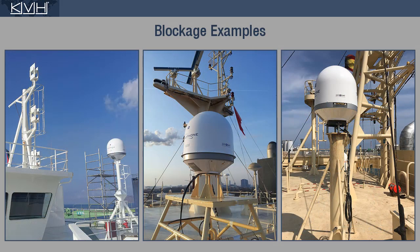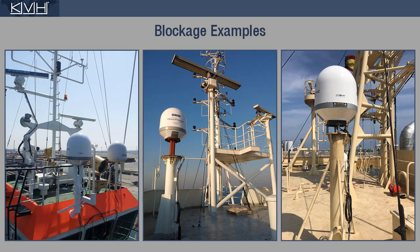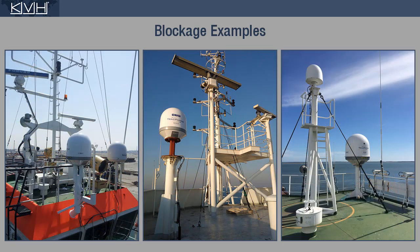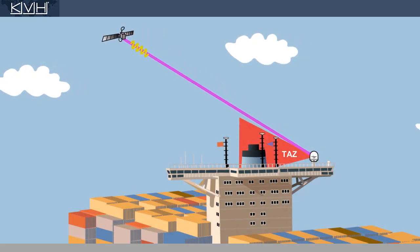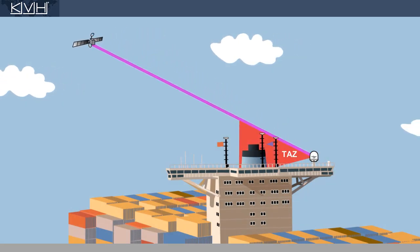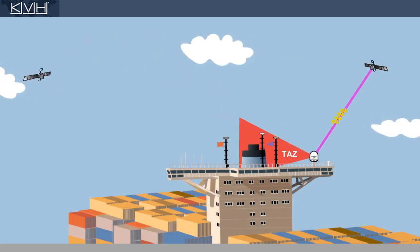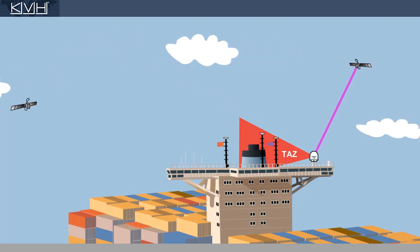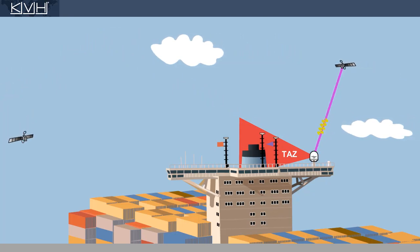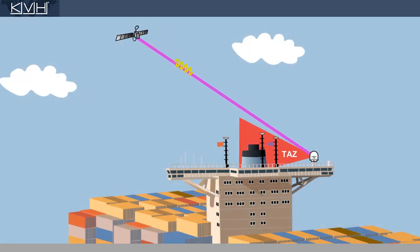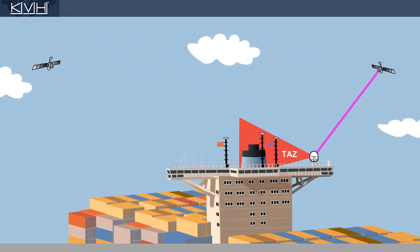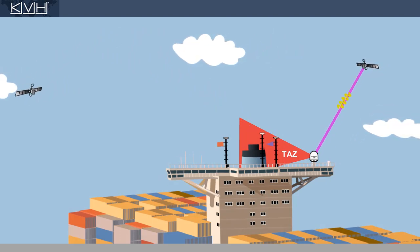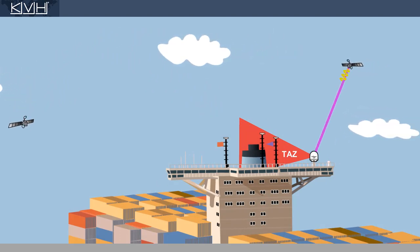RF energy emitted by a radar or high-power radio can also degrade the signal. With a tracking avoidant zone setup, you prevent the antenna from pointing toward a known obstruction that is likely to cause marginal reception and poor performance. Instead, the antenna quickly switches to a different satellite, provided an alternative is available in your region.